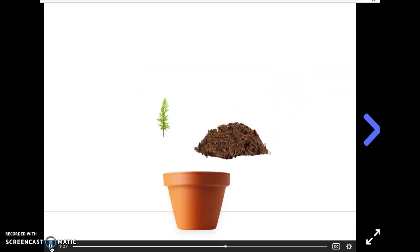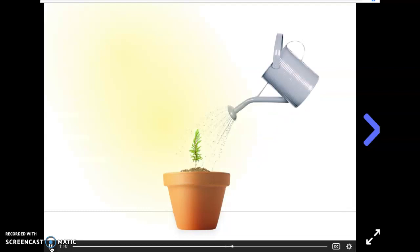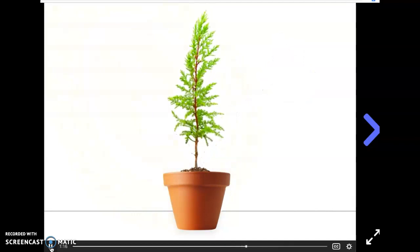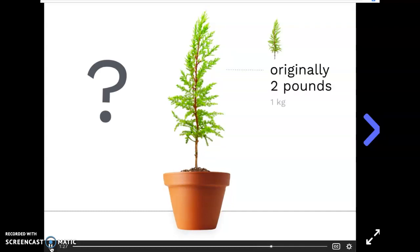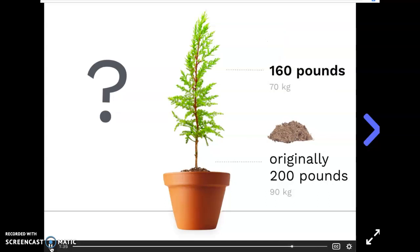After weighing and planting the tree, he watered it and made sure that it got all the sunlight it needed too. A few years later, once the tree had grown to be bigger, he took it out of the pot again and measured the weight of the tree and then the weight of the soil. Do you see his idea here? Remember, the original weight of the tree was about two pounds and the original weight of the soil about 200 pounds. After the tree had grown, the tree now weighed about 160 pounds. So the tree had gained a huge amount of weight. But now what about the soil? If the tree had been eating the soil, if soil is a tree's food, then what do you think he would discover when he went to weigh the soil?